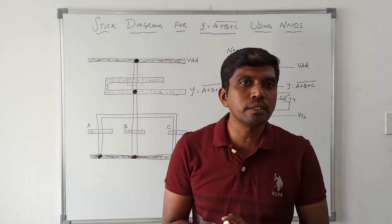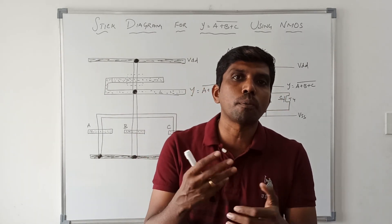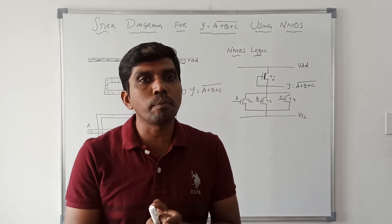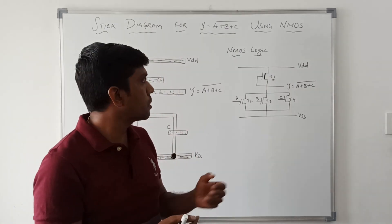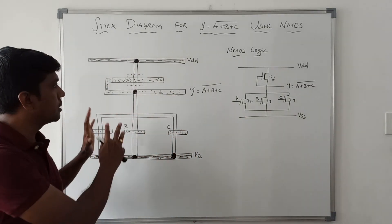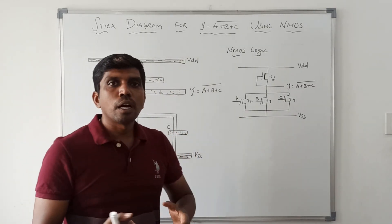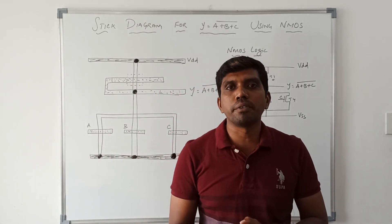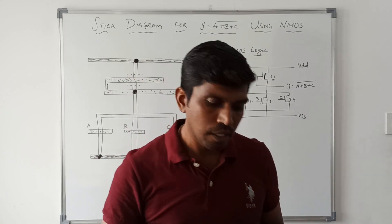First read the Boolean expression and identify which operators are present. Based on the operator, make the logic diagram. After drawing the logic diagram, fix the transistors in the layout. I hope you understood the concept very well. If you are watching for the first time, kindly subscribe and support us to make more videos. Thank you.